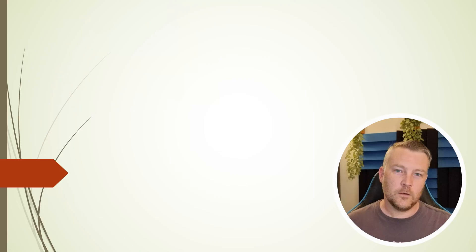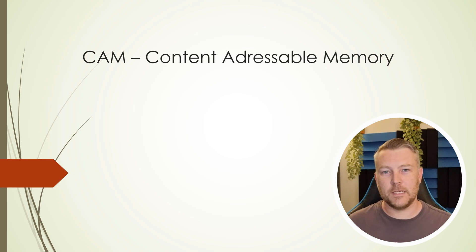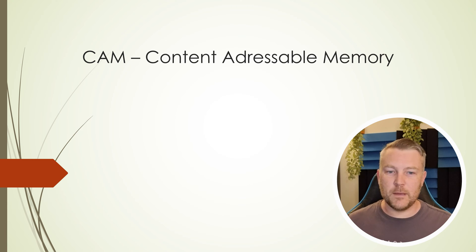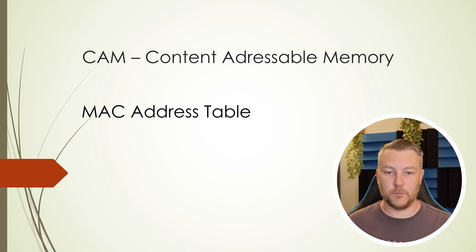Welcome! Today I'd like to talk about the CAM and the TCAM and the differences between them. Switches and routers use specialized hardware in order to forward frames and packets through themselves very quickly. One of these bits of hardware is called the CAM, or Content Addressable Memory. This is high-speed memory that contains the MAC address table.